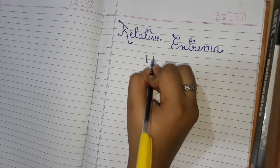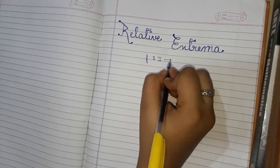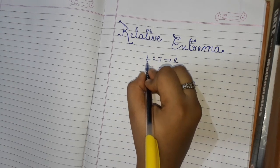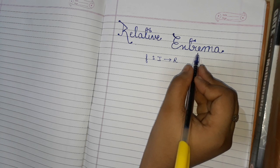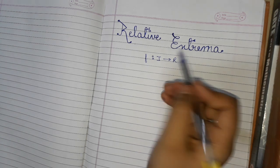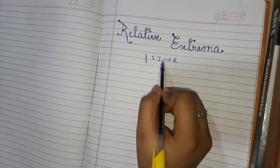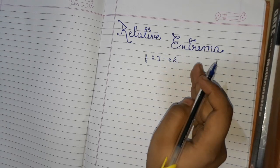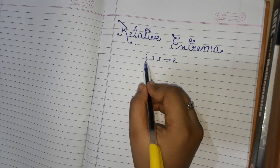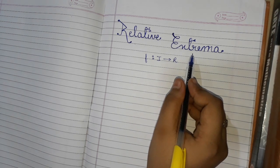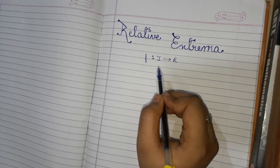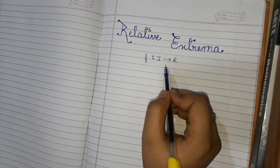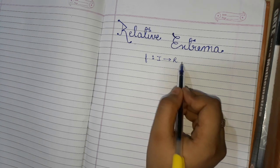Let f be a function which is defined from I to R. The function f is said to have a relative extrema at some point c, where c belongs to interval I, if it has either relative maxima or relative minima at c. That is, either relative maxima or relative minima exist at that point.